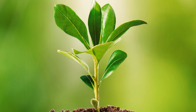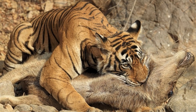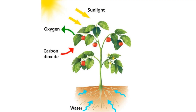Sun helps plants to grow. Plants are the only living things which make their own food. Animals either eat plants or the flesh of other animals. Photosynthesis is a process by which plants make their own food from water, carbon dioxide and chlorophyll in the presence of sunlight.